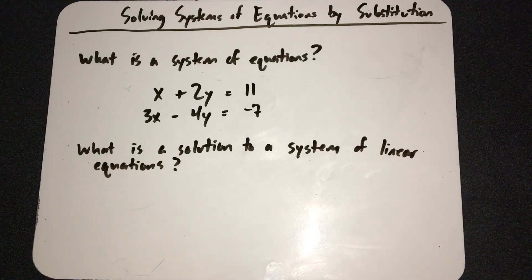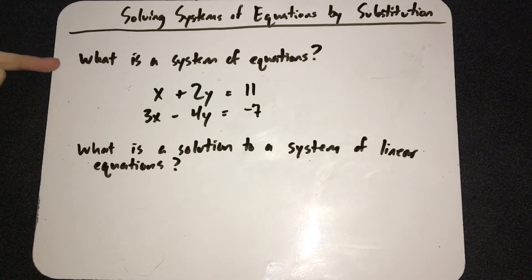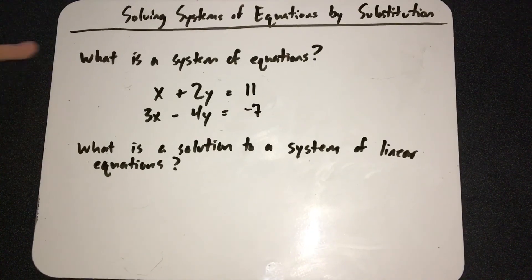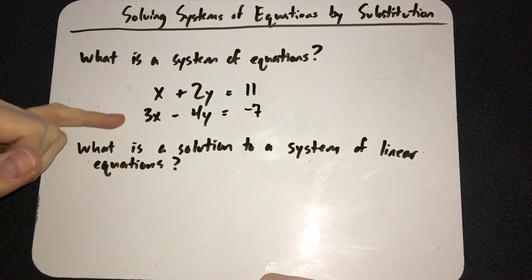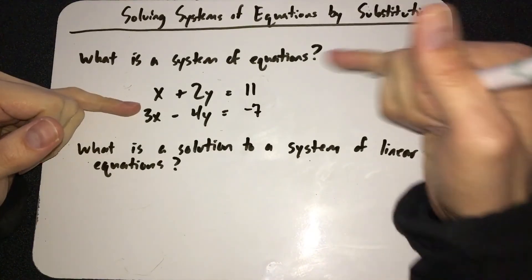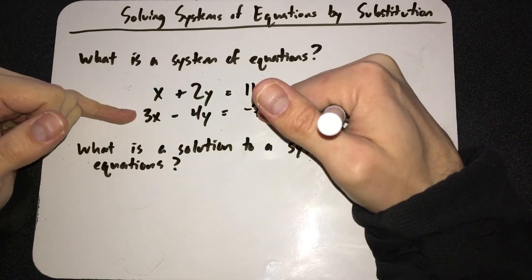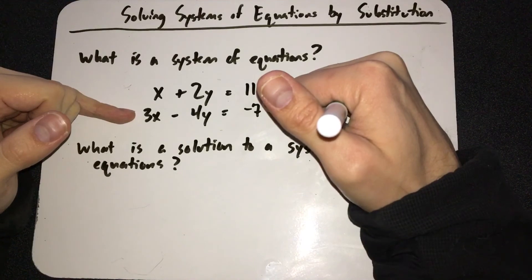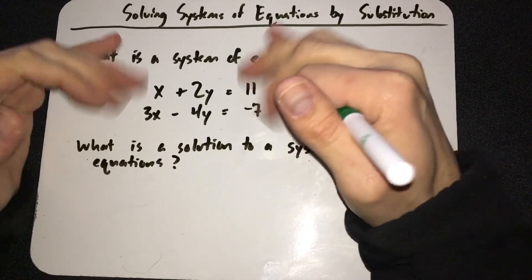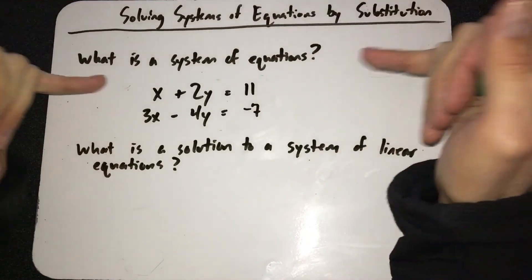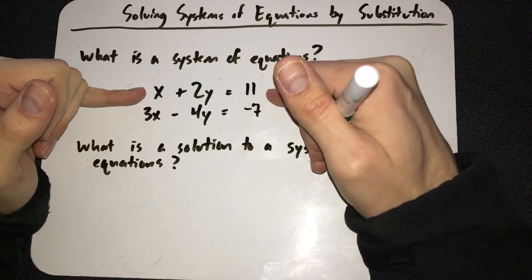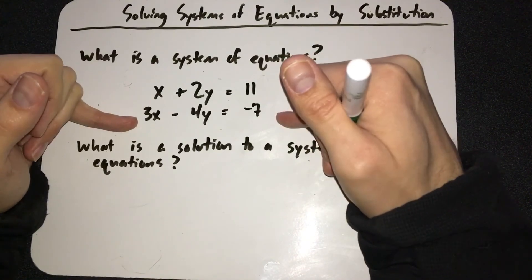There are lots of ways to solve systems of equations — I can think of like three different ways. Substitution is just one method, and that's the one we're going to focus on today. A system of equations is just a group of equations that all have the same variables, like x's and y's. If there are two equations, that means there are two variables.